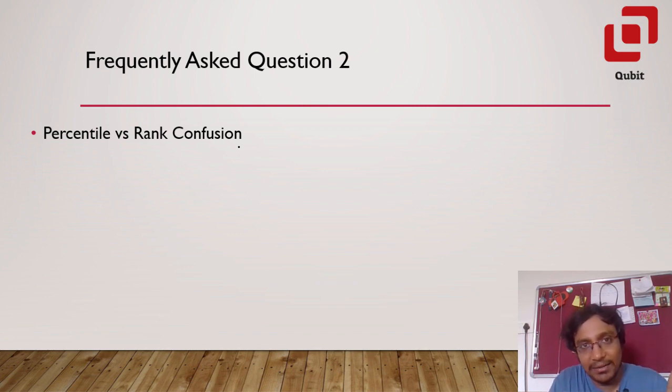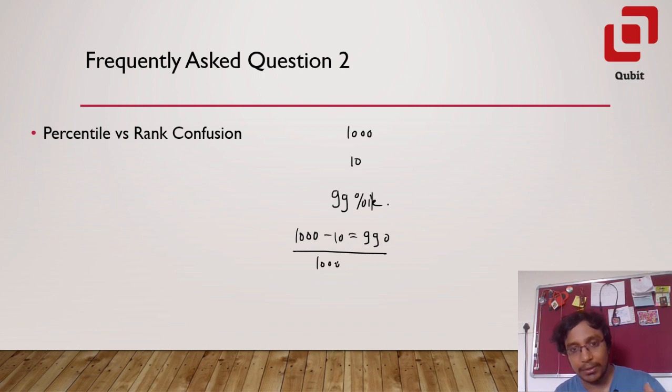A related frequently asked question is: is percentile and rank the same? Rank is the only thing that matters the most. Percentile is an alternative way of expressing your rank. Here is an example. Suppose 1000 candidates appear for the IISER aptitude test 2023 and your rank is 10, your all India rank is 10. Then what is going to be your percentile? It's going to be 99. How is it calculated? It is calculated by considering the number of students who are behind you, so that is 990, dividing it by the total number of students appeared for that exam into 100. That will give you your percentile.